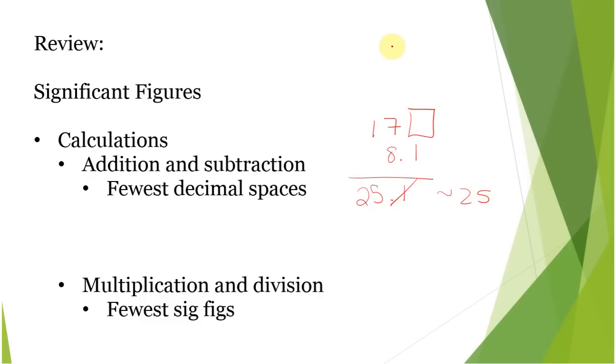If you had 17.45 plus 8.1 here, that would have given us 25.55. We can't know this number, so we can't go to this second decimal space. We're going to use this number to round, and this is going to make it 25.6.